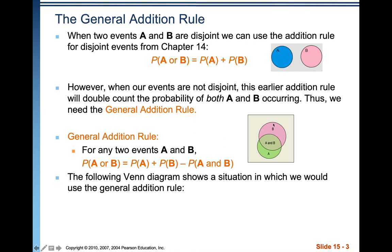So what happens if the events aren't disjoint? If we add the probability of A plus the probability of B, we've double-added the A and B portion. So we have to correct our formula by subtracting off the probability of A and B.